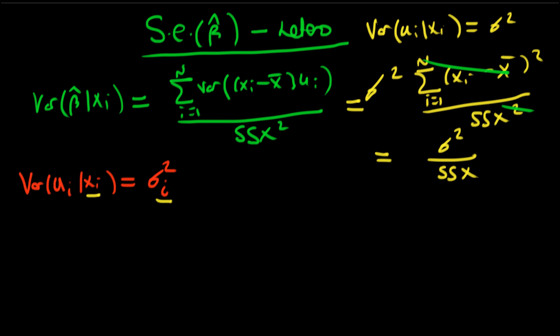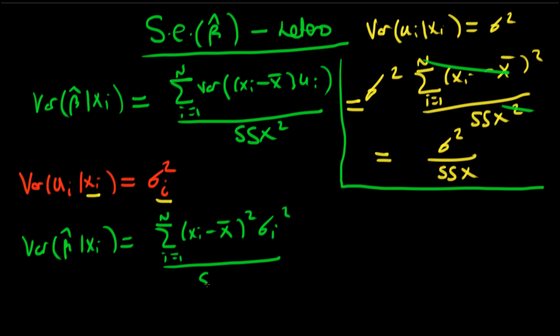So in the presence of heteroscedastic errors, we can't make some of the simplifying assumptions we've made to get this stuff on the right here. So our variance of beta hat given xi now is going to be equal to the sum of i equals 1 to n of xi minus x bar all squared times sigma i squared, all divided by ssx all squared.